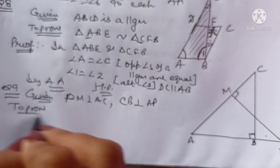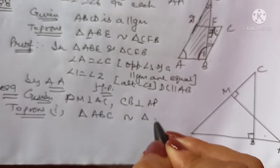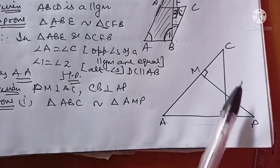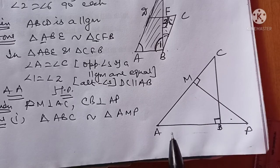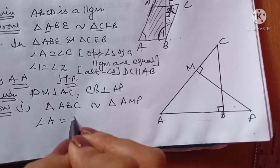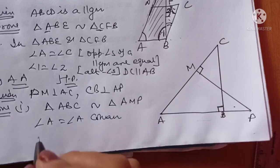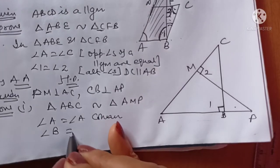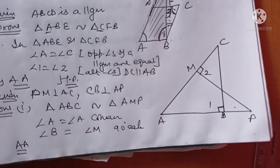First part: prove triangle ABC is similar to triangle AMP. In triangles ABC and AMP, angle A is equal to angle A — common. Angle B (in triangle ABC) equals angle M (in triangle AMP) — both 90°. So by AA rule, triangle ABC is similar to triangle AMP.